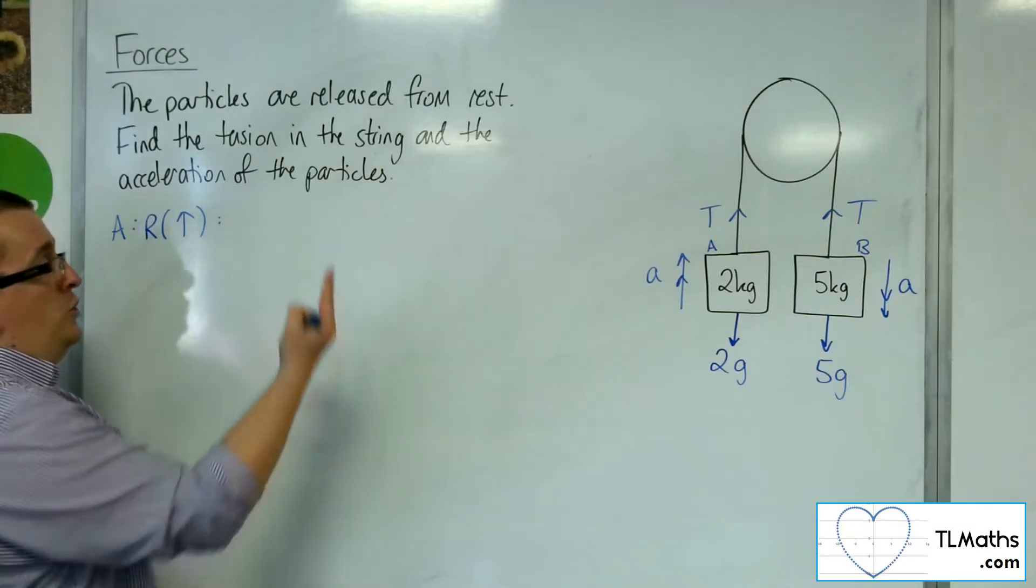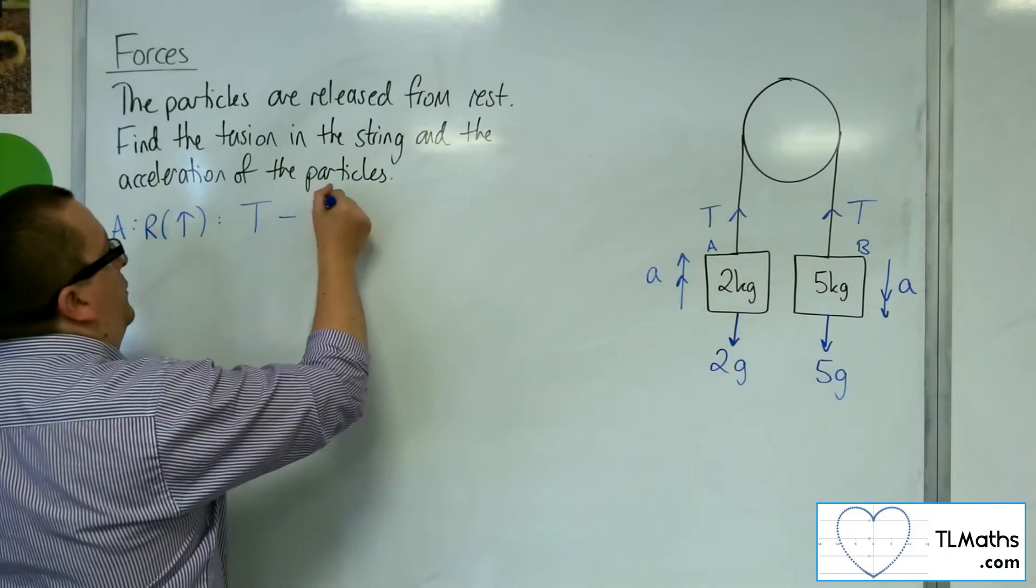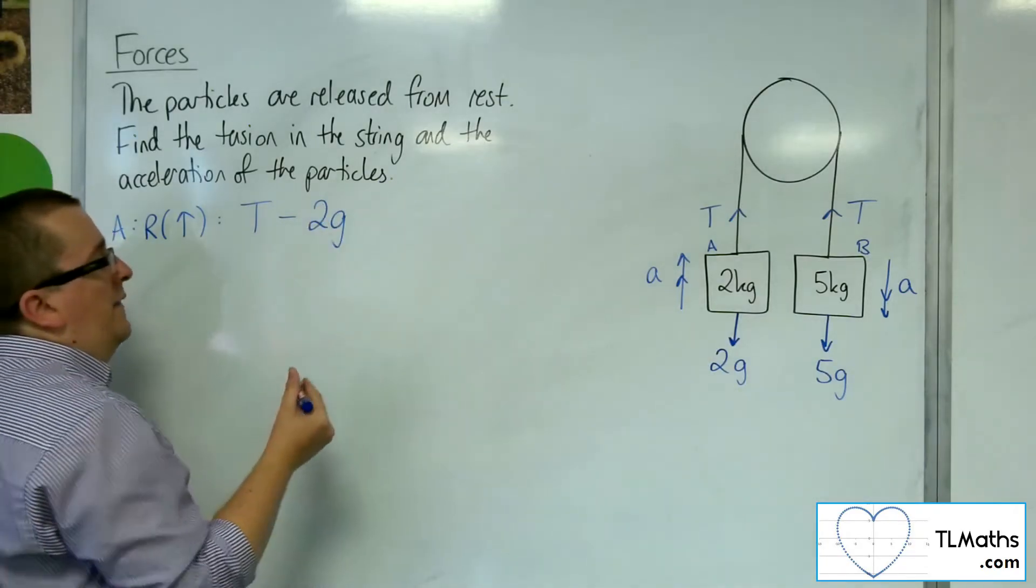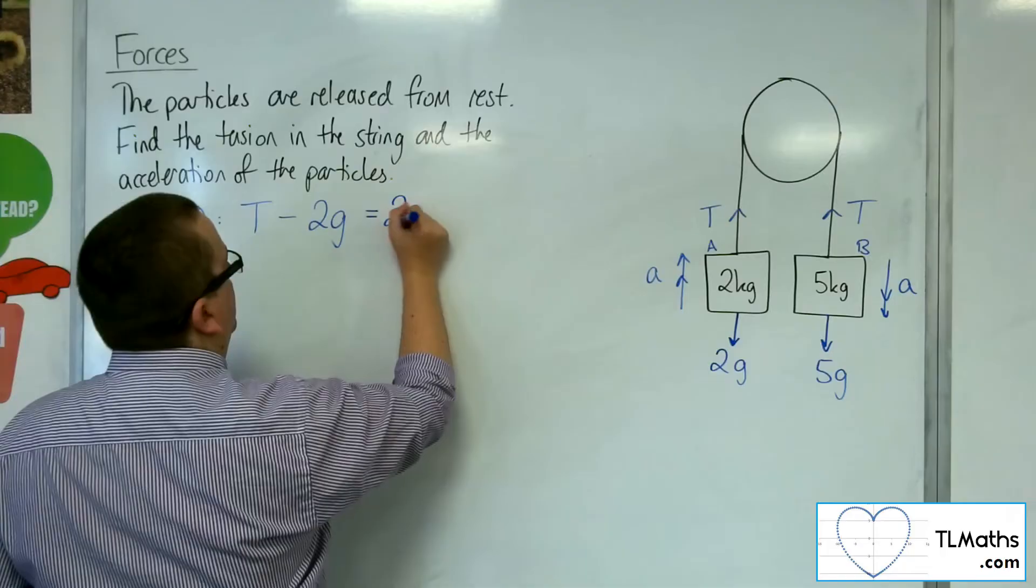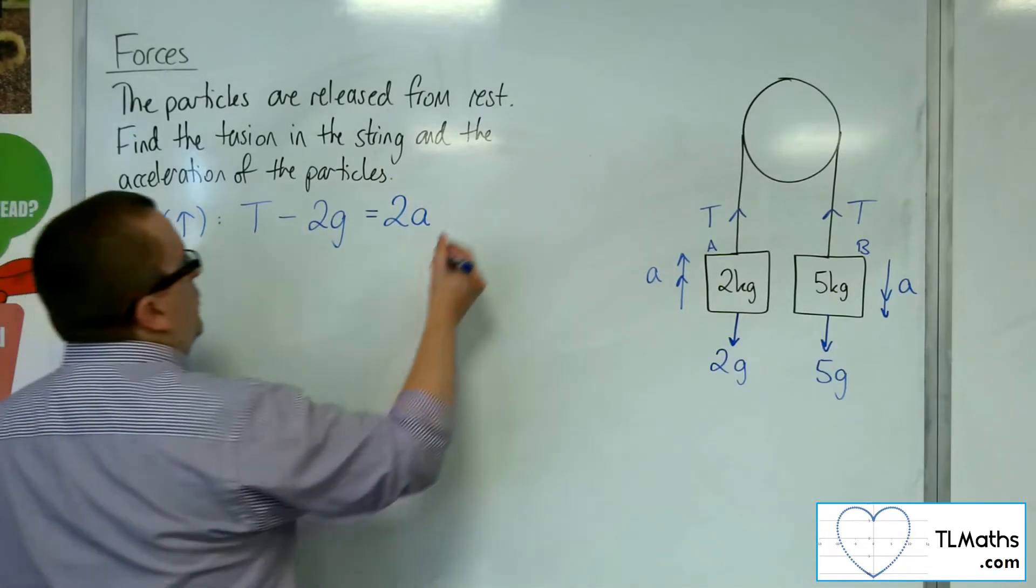So I've got the tension working upwards, I've got 2g working downwards, the weight. And that's got to be equal to the mass times the acceleration, F equals ma. So that's equation number 1.